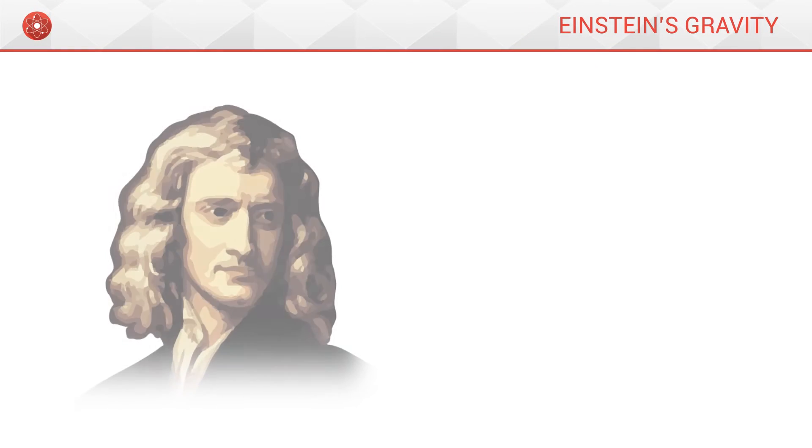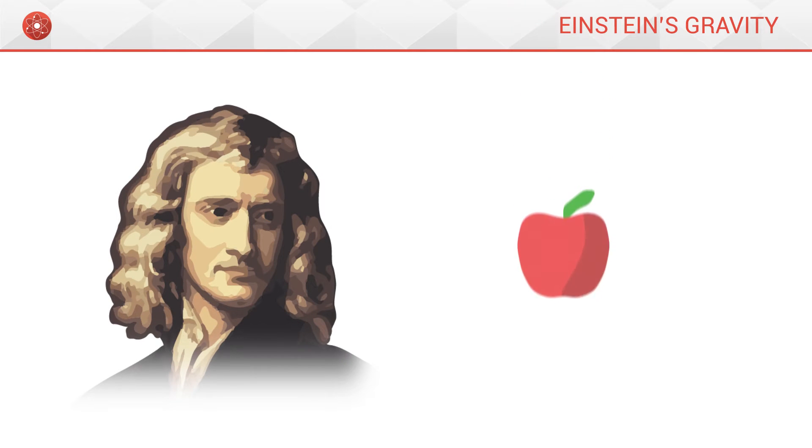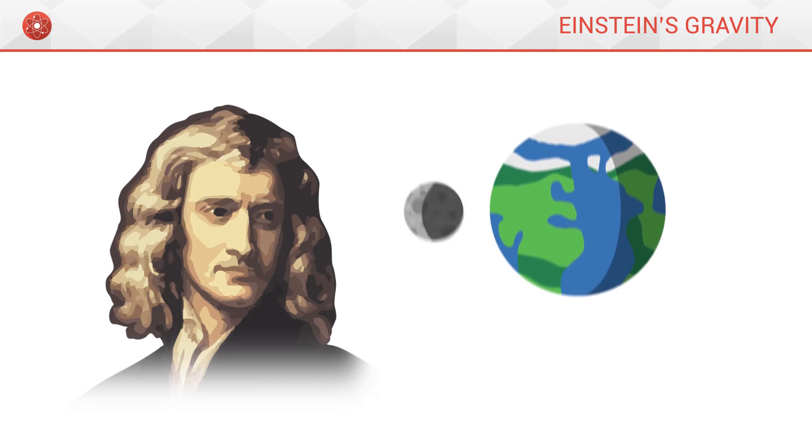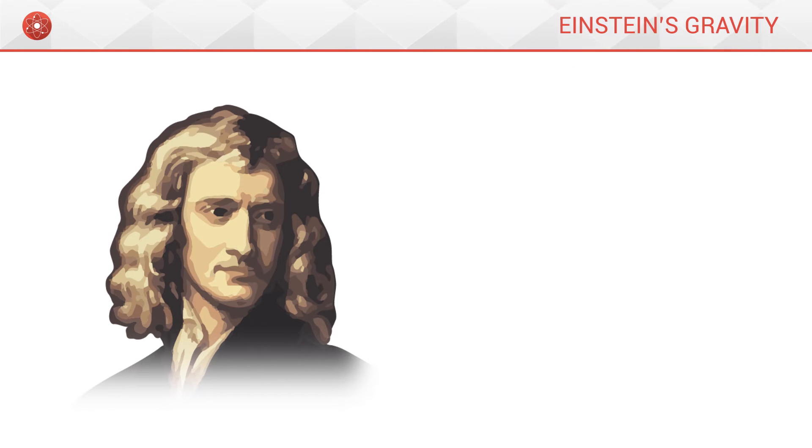In the 17th century, Newton discovers universal gravitation. With this, he manages to predict the movement of an apple falling from a tree, or the orbit of the moon around the Earth. However, Newton does not manage to explain why gravity exists, nor how it acts.